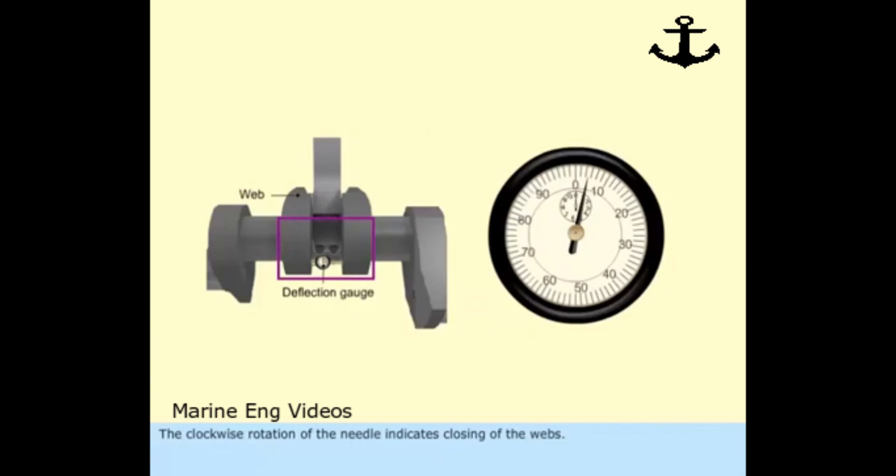The clockwise rotation of the needle indicates closing of the webs. The corresponding gauge reading is taken as negative value. Anti-clockwise rotation indicates opening of the webs. The corresponding gauge reading is taken as positive value.